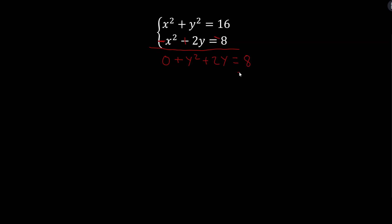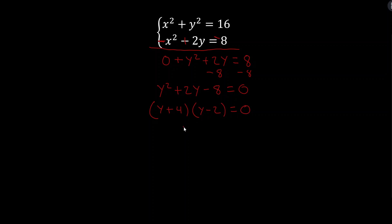After adding, x squared minus x squared is 0, and y squared plus 2y equals 16 minus 8, which is 8. Subtracting 8 from both sides gives y squared plus 2y minus 8 equals 0. We factor by finding two numbers that multiply to negative 8 and add to 2 — those are positive 4 and negative 2. So y equals negative 4 and y equals positive 2. Now we need the corresponding x values — these are y values, not final solutions.